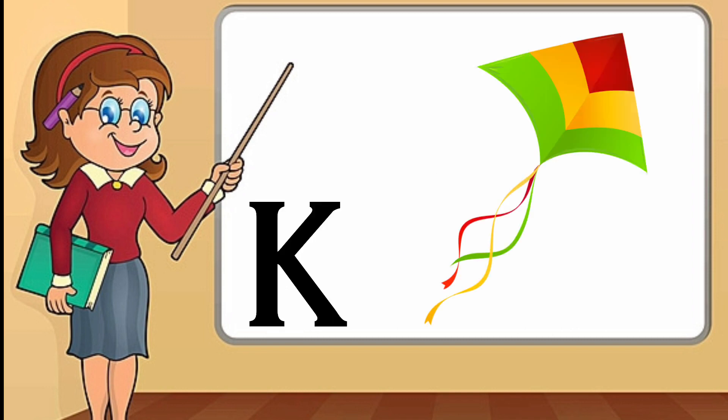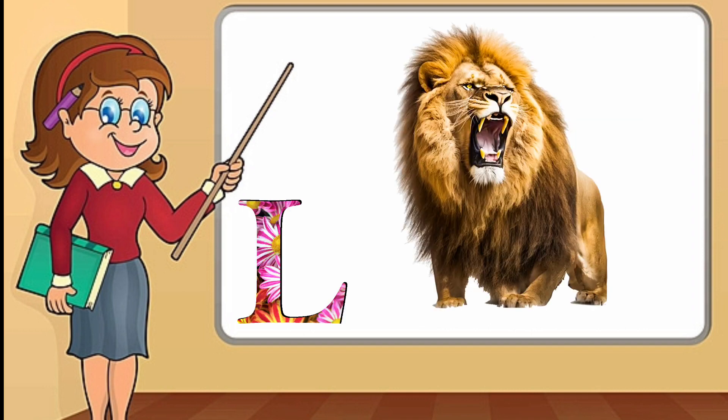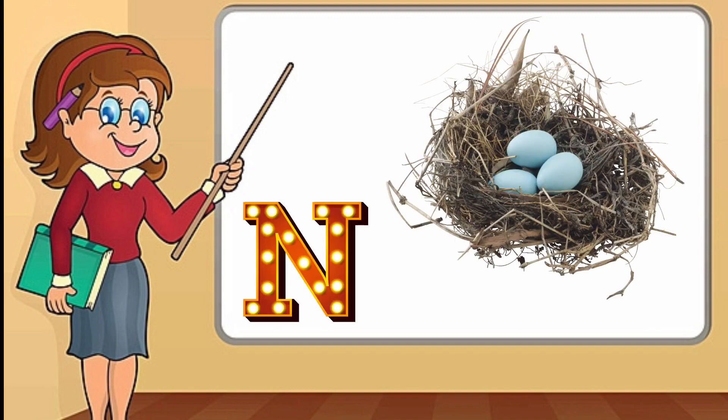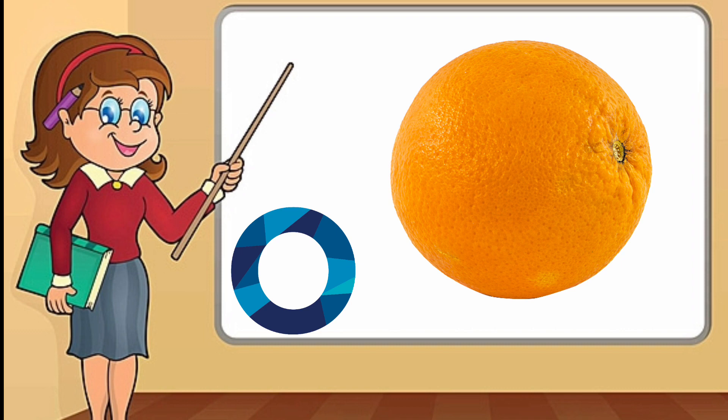K. K for kite. L. L for lion. M. M for mango. N. N for nest. O. O for orange.